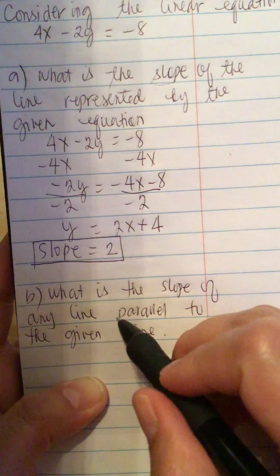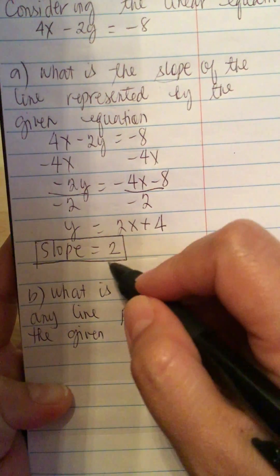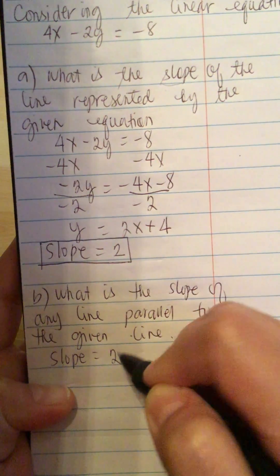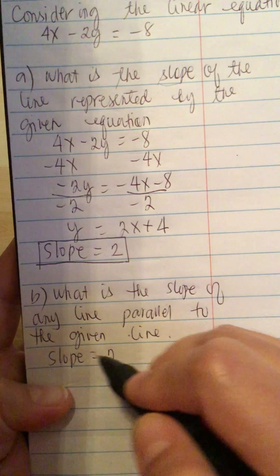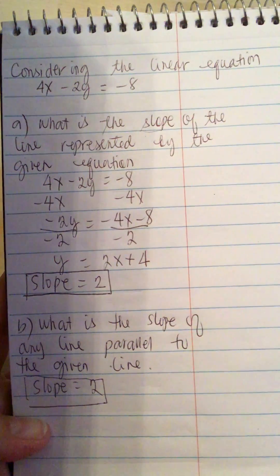So what is the slope of any line parallel to the given line? The slope is also 2. All lines that are parallel to this line have the same slope.